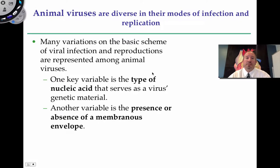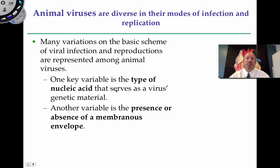Animal viruses are extremely diverse in terms of how they infect and how they replicate, but basically it's variations of a basic scheme. One of the ways there's some variation is that animal viruses can be classified by their nucleic acid: some are single-stranded DNA, some are double-stranded DNA, some are double-stranded RNA, and some are single-stranded RNA.